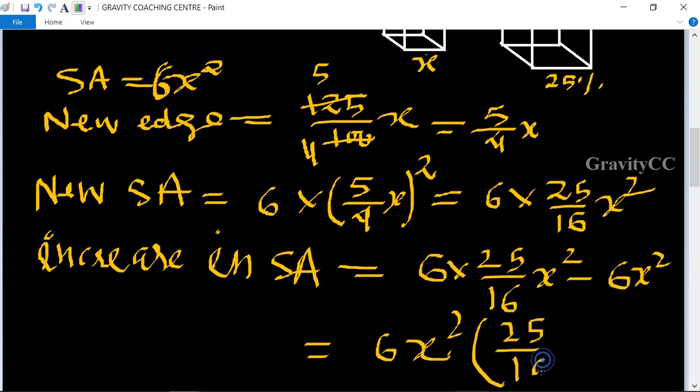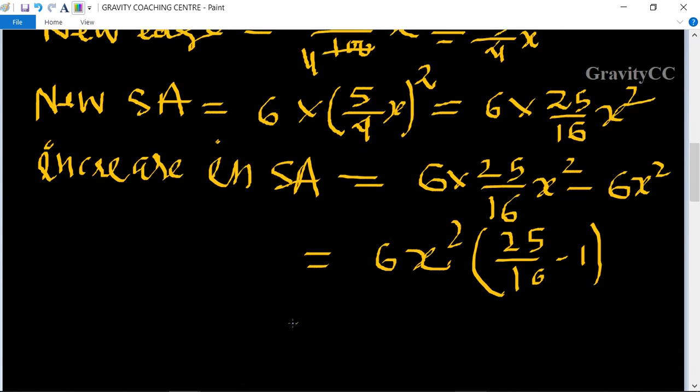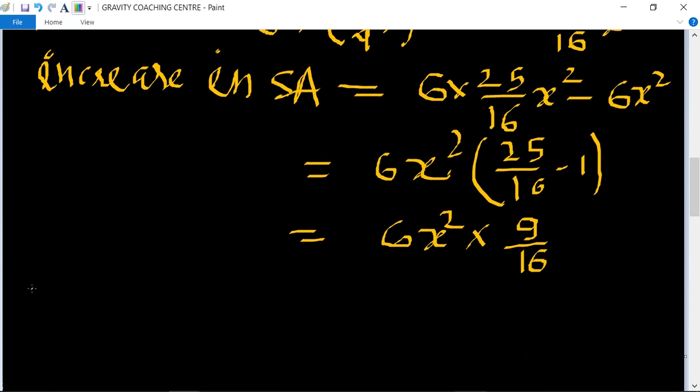Therefore percentage increase in surface area equals the difference 6x² × 9/16 divided by the original 6x², multiplied by 100.